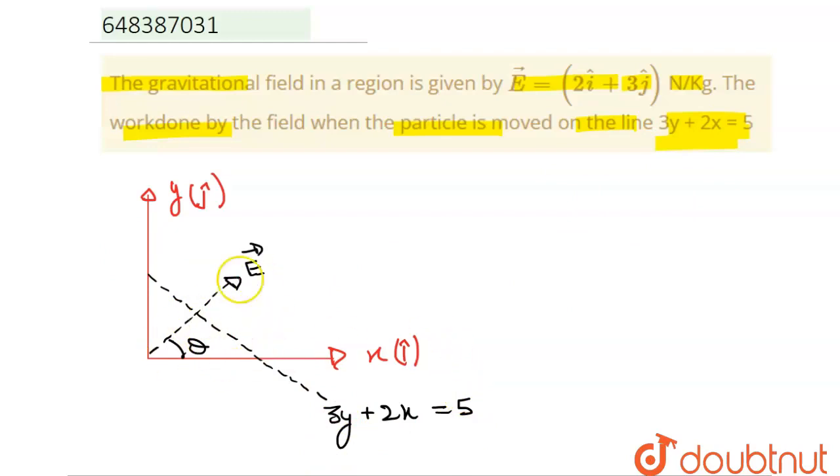Now, the E is in the direction of the electric field. We know that potential V equals minus E dot R, and work done equals M into Del V.